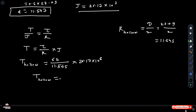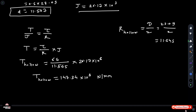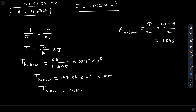T hollow equals 147.34 times 10 cubed newton per mm, which equals 147.34 newton per meter.